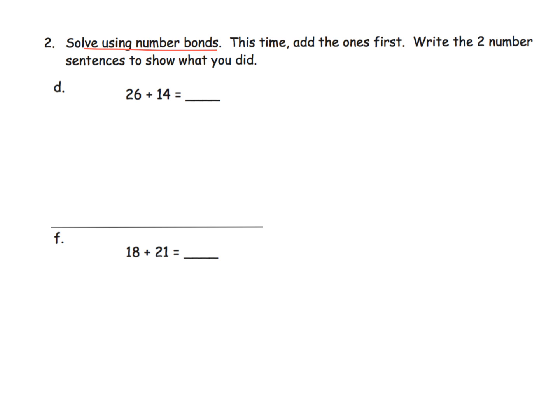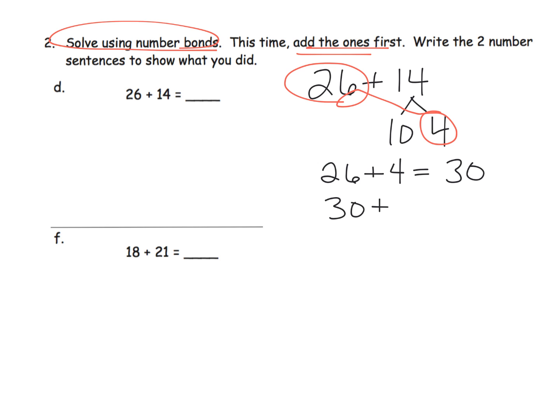Now here we're going to be still decomposing, but now we're going to be asked to add the ones. So we're going to start with 26 plus 14, and I'll write it a little bit bigger over here. 26 plus 14, and we're going to decompose that number in the teens. Now here, because they're asking us to add the ones first, I'm going to add the 26 plus the 4, which is in the ones place. So that's going to be 26 plus 4, which gives us 30. And then I'm going to take that 30, and I'm going to add in the 10 that we have left over, which gives us 40. So the final answer is 40.